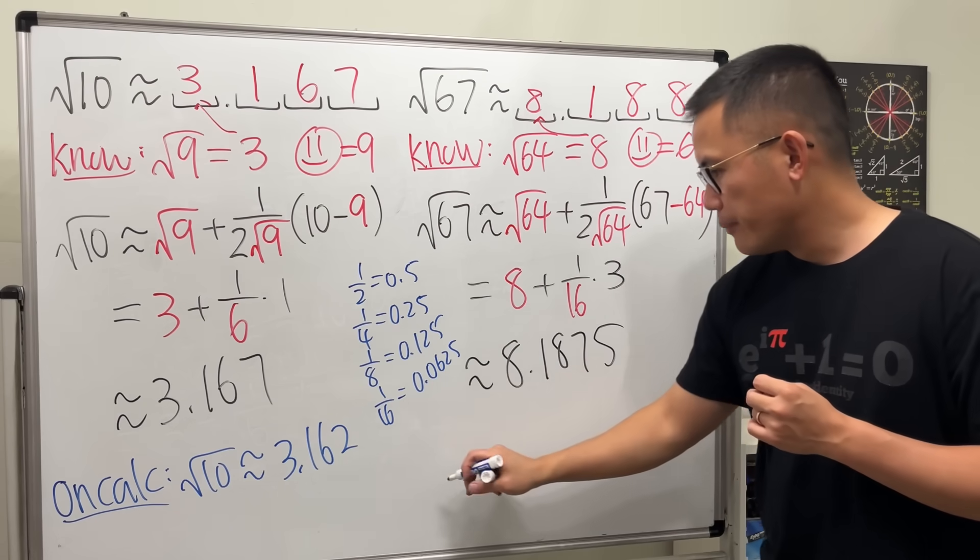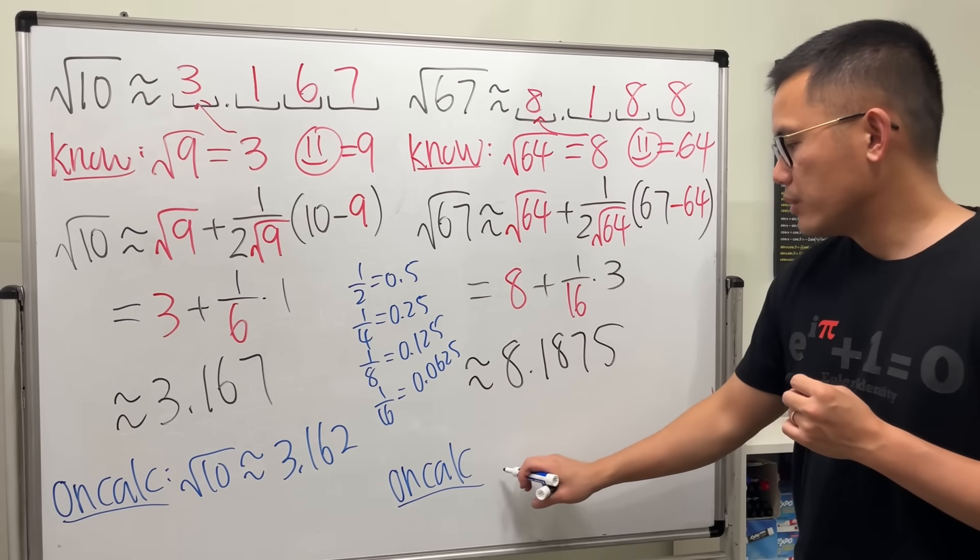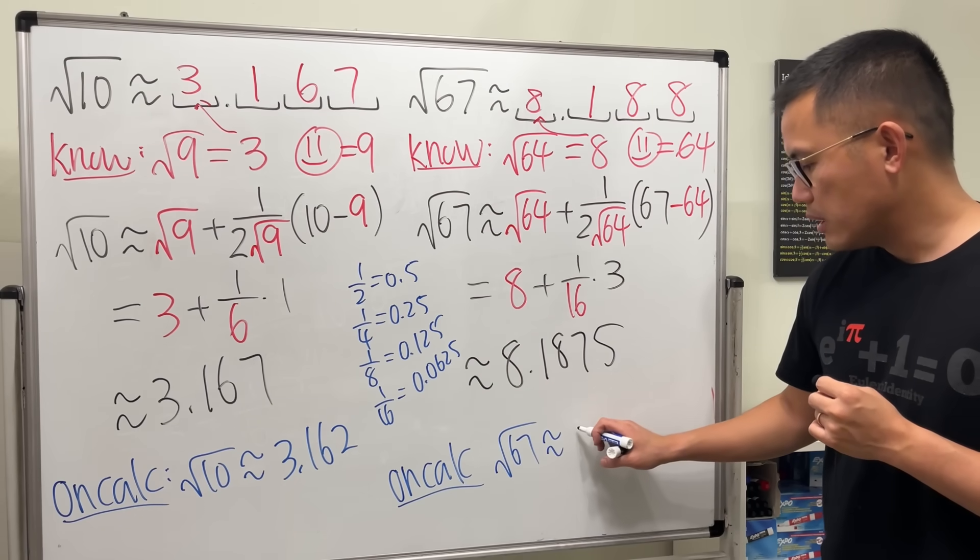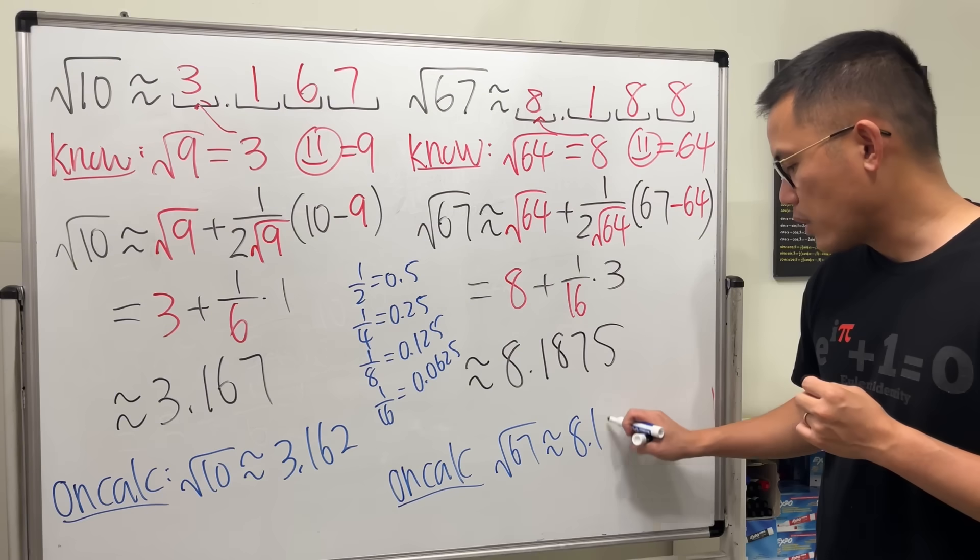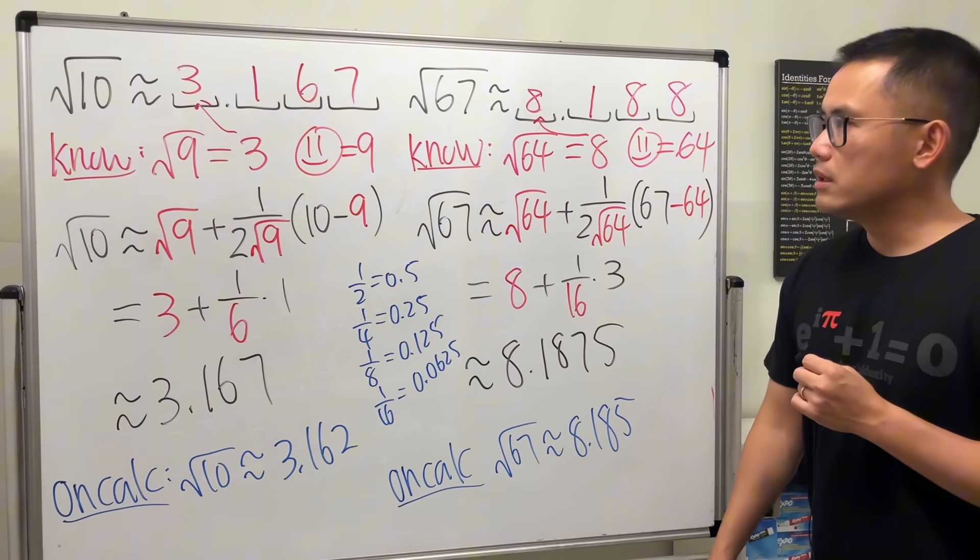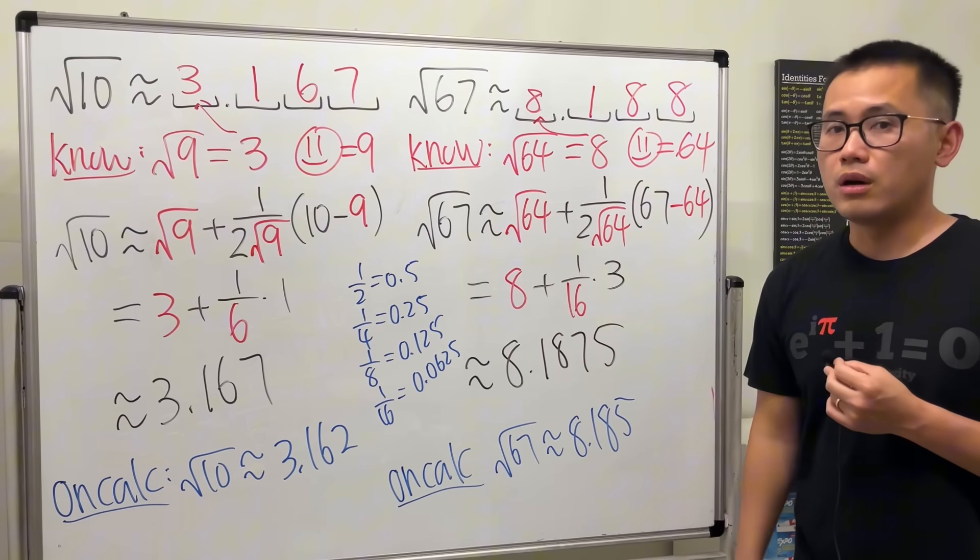And I will tell you, on the calculator, if you use square root of 67 on the calculator, you get approximately 8.185. Pretty close. Yeah. It's just the last digit that's a little bit off. That's all. But the rest are correct.